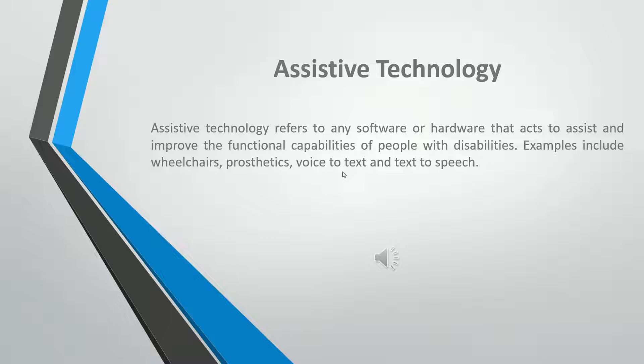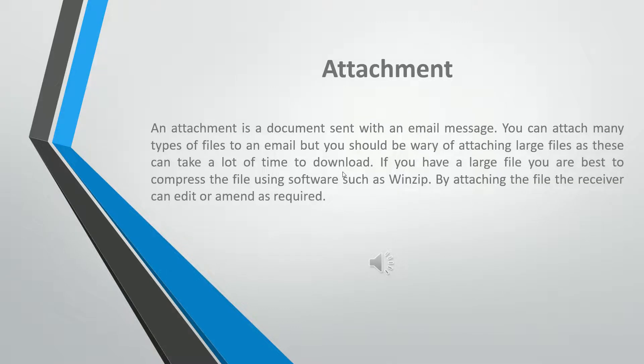Examples of assistive technology include wheelchairs, prosthetics, voice-to-text and text-to-speech. An attachment is a document sent with an email message. You can attach many types of files to an email, but you should be wary of attaching large files as these can take a lot of time to download. If you have a large file, you are best to compress it using software such as WinZip. By attaching the file, the receiver can edit or amend as required.